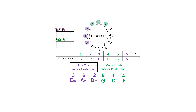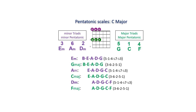The C major scale degrees ordered in fourths show minor triads and minor pentatonic scales from 3, 6, and 2, and major chords and major pentatonic scales from 5, 1, and 4. Every major pentatonic scale has a relative minor whose root is a minor third below and uses the same notes but different intervals. The relative pentatonic scales in the key of C major are shown below.